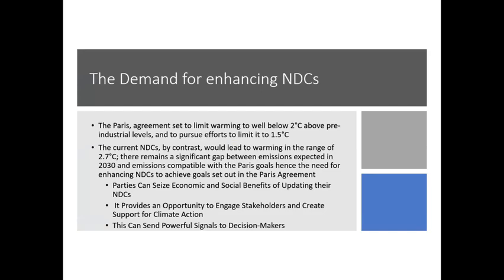Demand for NDCs is great. The Paris Agreement aims to limit warming to well below 2 degrees below pre-industrial levels, and to pursue efforts to limit it to 1.5 degrees. The current NDCs, by contrast, would only lead to warming of about 2.7 degrees Celsius. There remains a significant gap between emissions expected in 2030 and emissions compatible with the Paris goals — hence the need for enhancing NDCs to achieve the targets set out in the Paris Agreement.